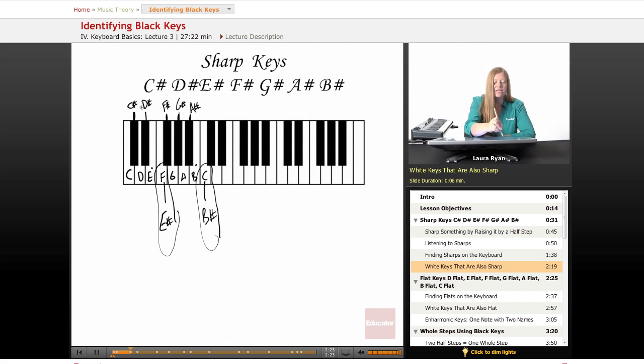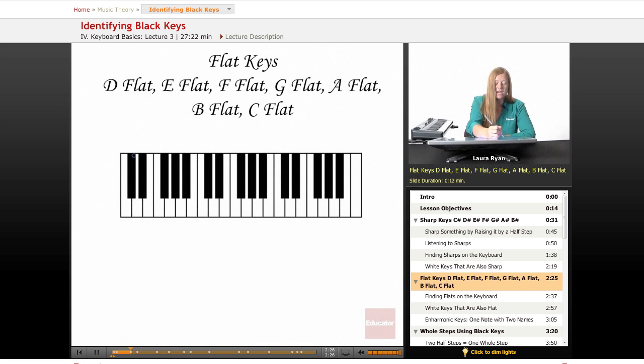Now, these sharp keys can also be called flats. The flat keys are also easy to find. Let's begin by drawing the names of the white keys. Here is the black key below D, we start with this one. This is D flat.